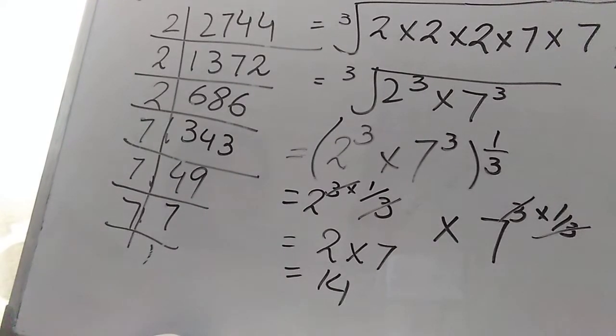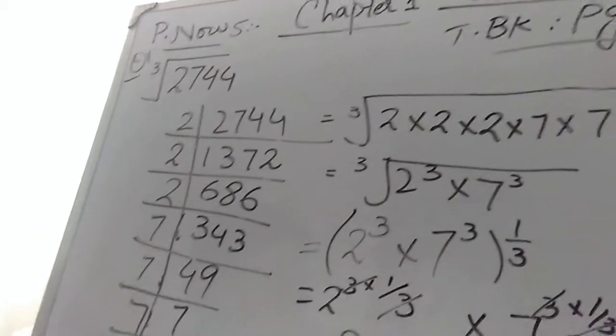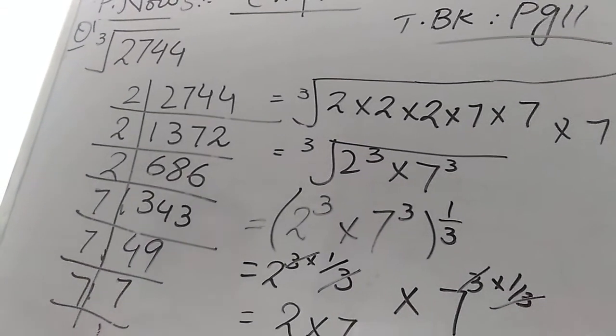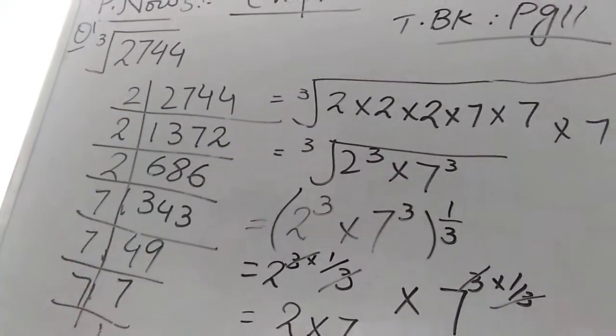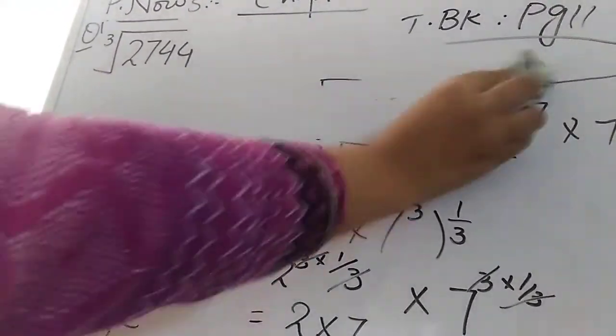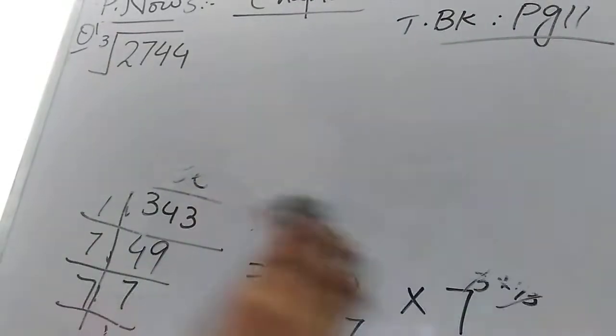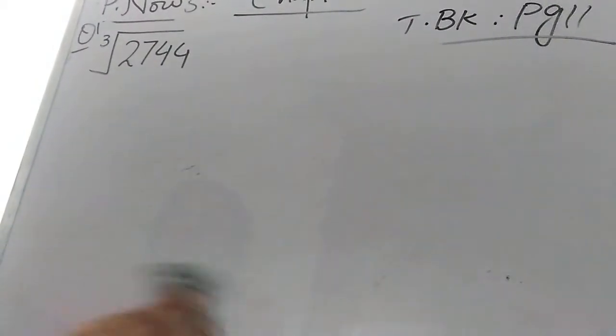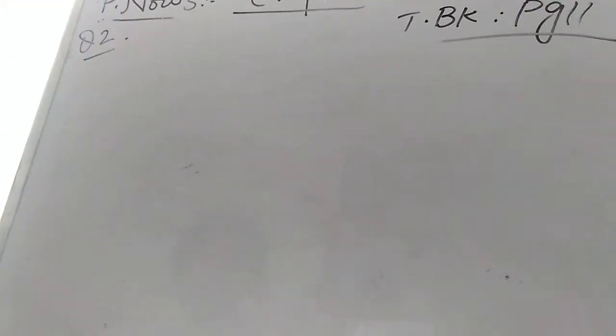Now I am going to explain Question 2 of Practice Now 5. The question is: given that the prime factorization of 9261 is 3 power cube and 7 power cube, find the cube root of 9261 without using a calculator.